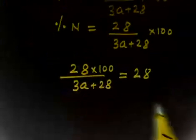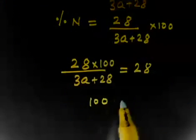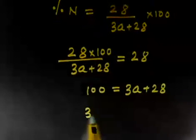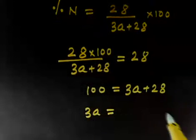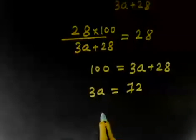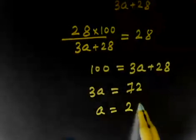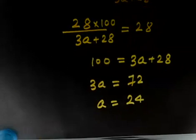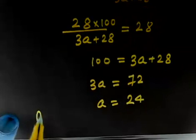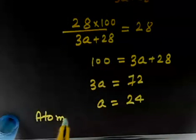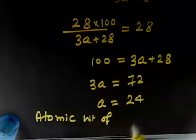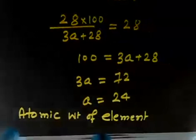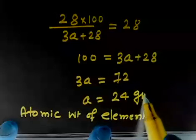Solving for A: 100 equals 3A + 28, so 3A = 72, which gives A = 24. So the atomic weight of the metal is 24 grams per mole.